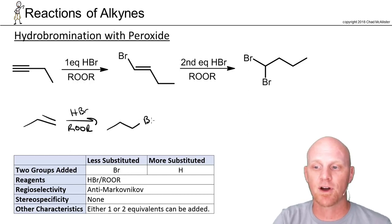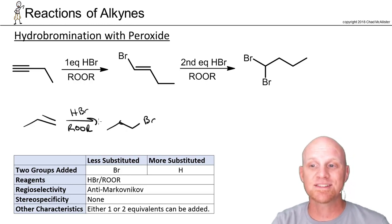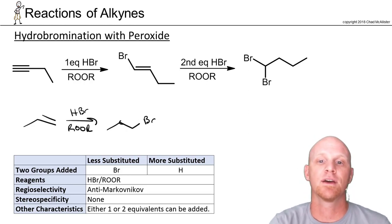The bromine on the less-substituted side, the hydrogen went on the more-substituted carbon. You can do the same thing with alkynes. Again, you can add one equivalent or two.